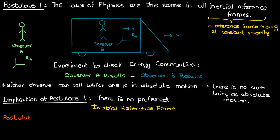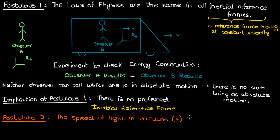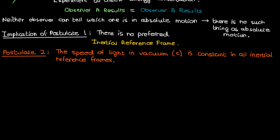The second postulate of special relativity says that the speed of light in vacuum, denoted by C — which is 299,792,458 meters per second — is constant in all inertial reference frames. Let's explain this with another thought experiment involving two observers.